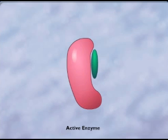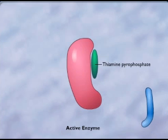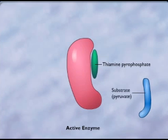The green coenzyme molecule shown is thiamine pyrophosphate, the cofactor needed to permit the enzyme and the substrate, pyruvate, to combine in the correct orientation to catalyze the reaction.